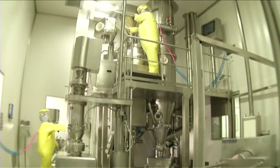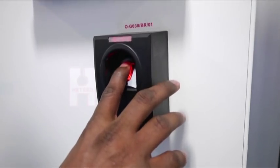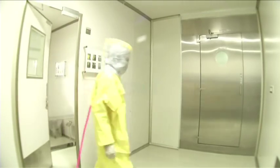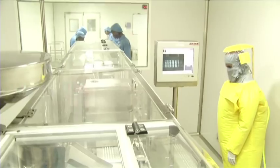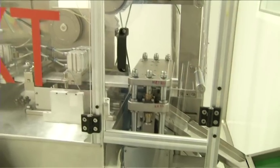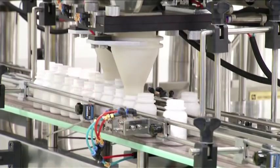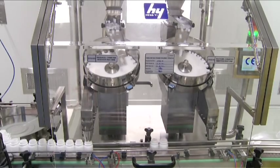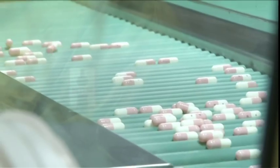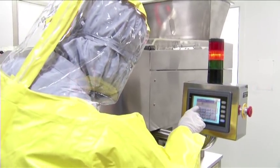The highest standards of containment processes are followed at Hetero. To begin with, access to the manufacturing areas is restricted. Biometric sensors ensure only authorized personnel enter these areas. The tablet and capsule manufacturing operations are carried out in Class 4 areas having advanced equipment for API containment and insulation. This ensures occupational exposure level of not more than 1 to 10 micrograms per cubic meter in 8 hours.